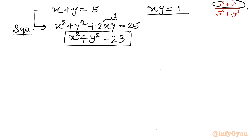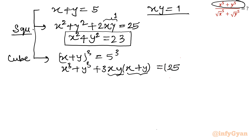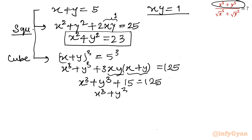Now I will consider cubing the same equation. (x + y)³ = 5³ gives x³ + y³ + 3xy(x + y) = 125. Since xy = 1 and x + y = 5, we get 3 × 1 × 5 = 15. So x³ + y³ + 15 = 125, therefore x³ + y³ = 110.